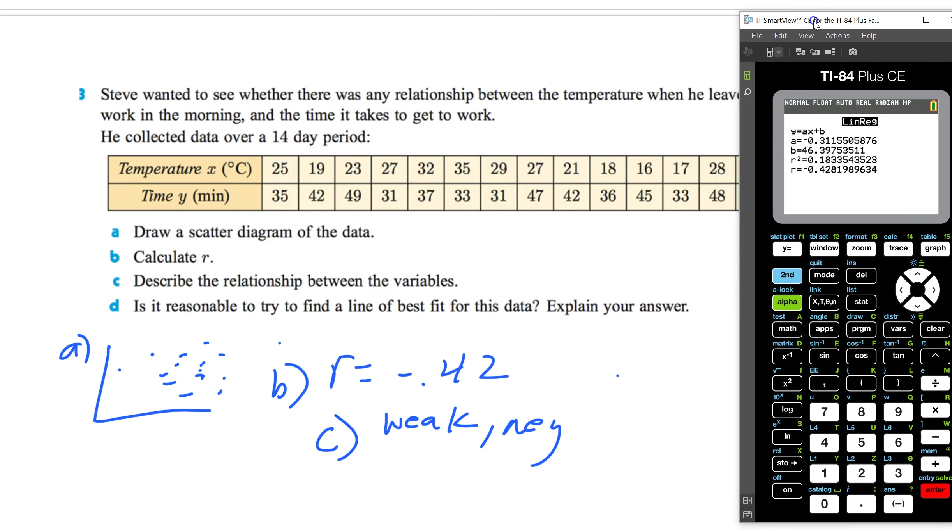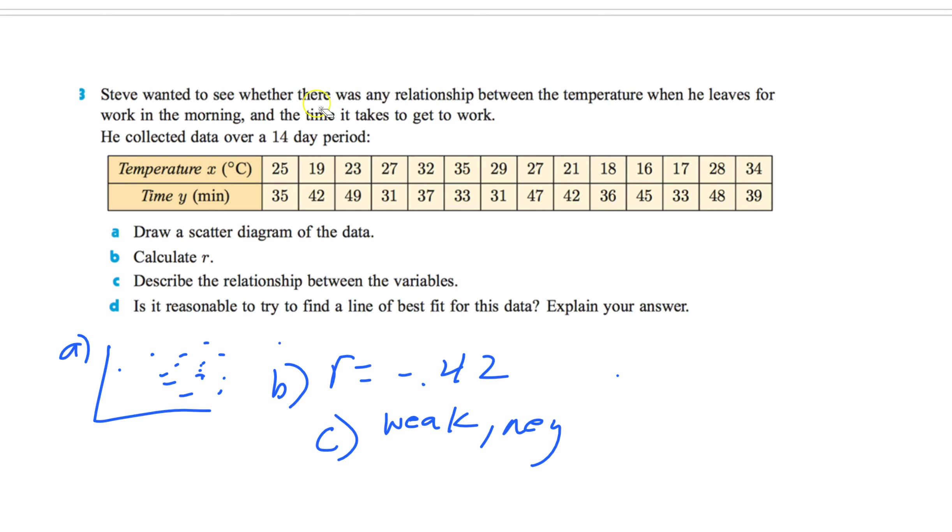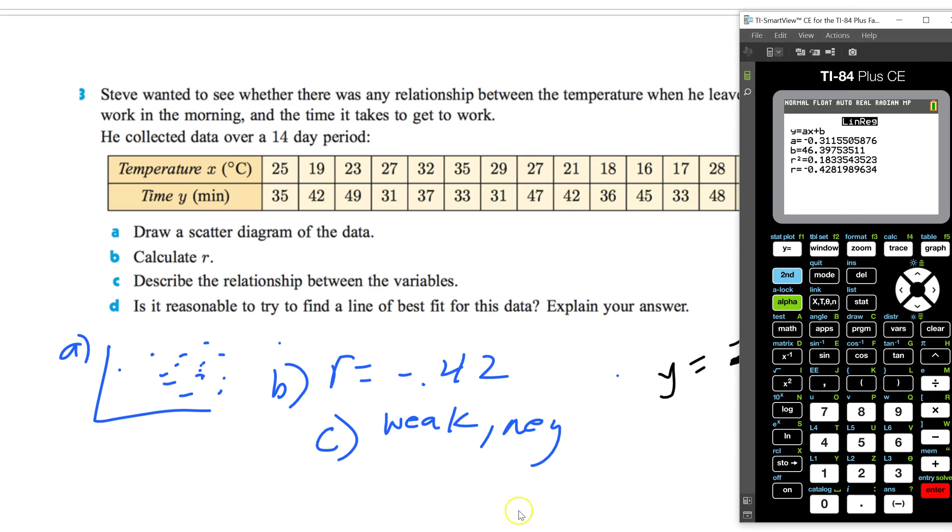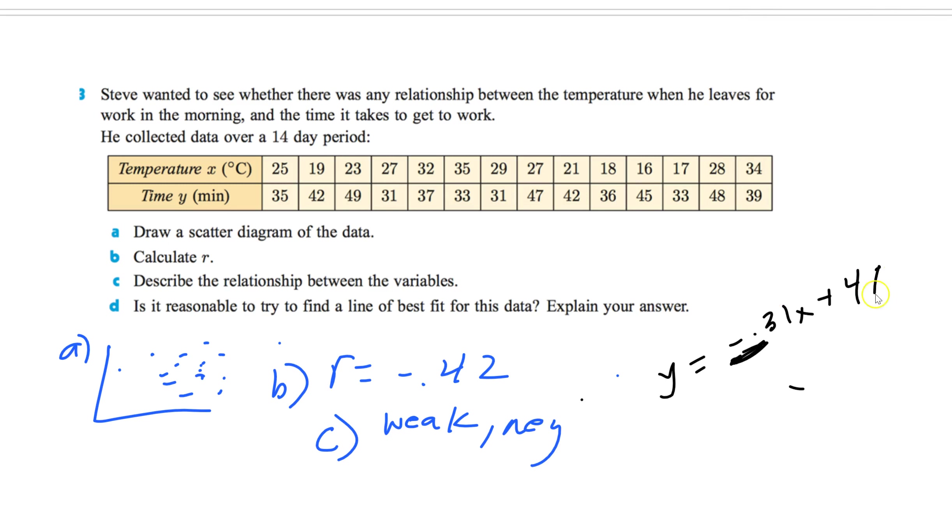Before I move on. I want to go back and look at our equation here. So based on our least square regression line. I got this equation. Y equals negative 0.31x plus 46.4. So Y equals negative 0.31x plus 46.4. Now remember. We could do a couple of things with this. I could plug in my temperature into here. And I'll get out minutes. I could plug in a minute and get the temperature out. And I'll tell us right now.